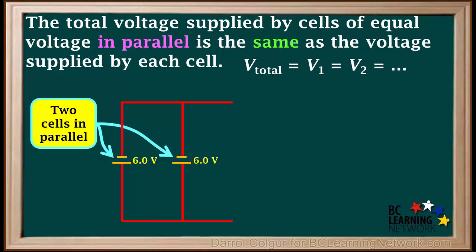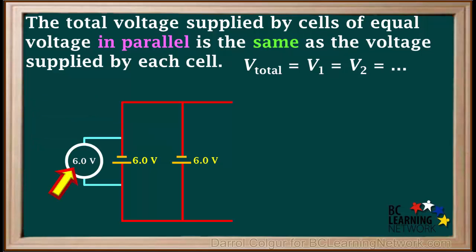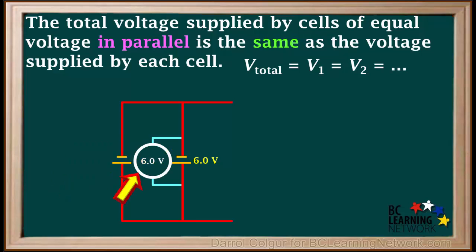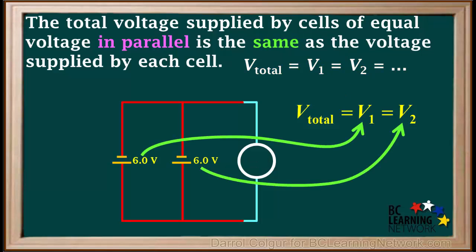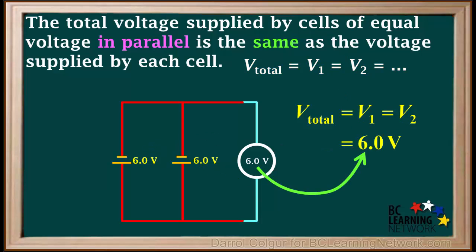Here is an arrangement of two 6-volt cells in parallel. If we attach the leads of a voltmeter across the first cell, the voltage reads 6 volts. If we attach the leads across the second cell, it also reads 6 volts. When attached to the whole combination, it also reads 6 volts. Using the equation, V_total equals V1 equals V2. V1 and V2 are both 6 volts, so V_total is also 6 volts.